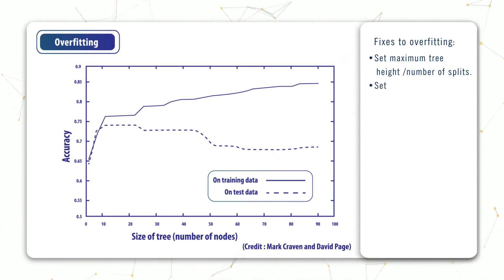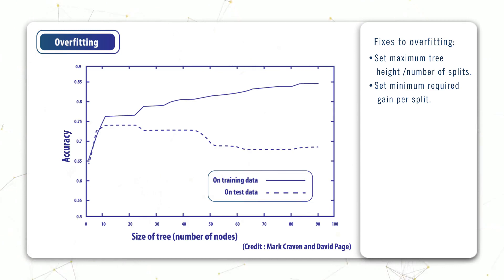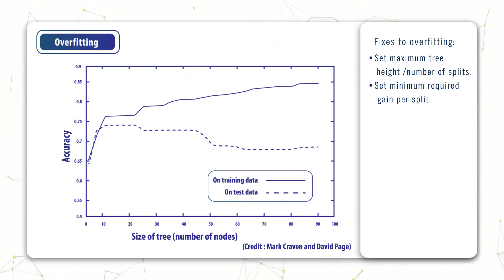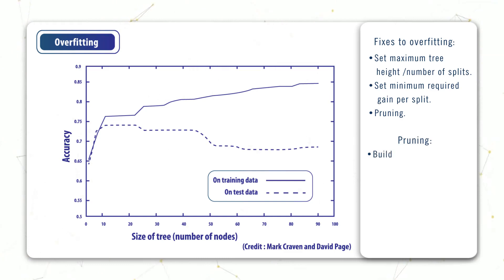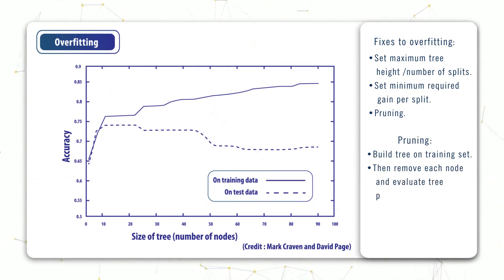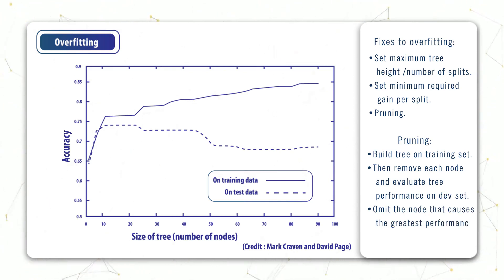The third way of reducing the number of nodes is by setting a minimum required gain per split. Once we split enough times such that our gain has dropped below some predefined threshold, we're not really getting much mileage from added tree complexity, so we can just stop splitting. Yet another way of reducing complexity is by a process called pruning — like trimming the branches of a tree. We build a tree on the training set, check how performance on the validation set improves with each node omitted, remove the node that causes the biggest decrease in performance, and repeat until we no longer see a performance improvement.